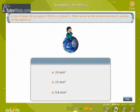A boy of mass 50 kg weighs 750 N on a planet X. What would be the acceleration due to gravity on the planet X?